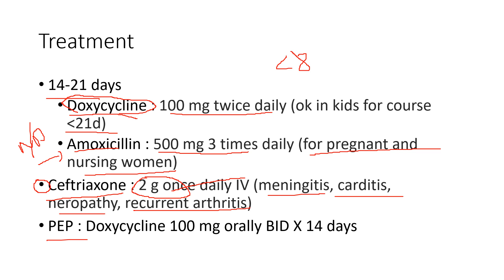The last option is post-exposure prophylaxis. If you're bitten by a tick in a highly endemic area for Lyme, you can take doxycycline 100 milligrams twice daily for 14 days as a prophylactic dose. To summarize: doxycycline for everyone, amoxicillin for pregnant and nursing women and very young children, and ceftriaxone for neurological manifestations in stage two or stage three. If you're bitten and highly suspect Lyme, doxycycline 100mg twice daily for two weeks is the post-exposure dosage.